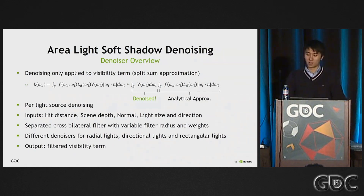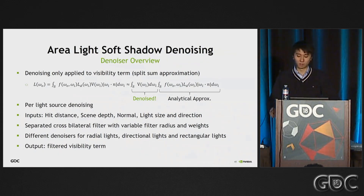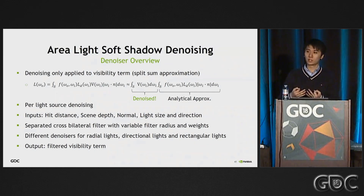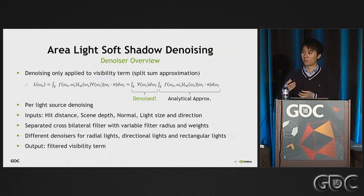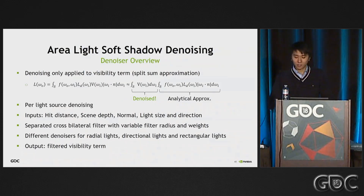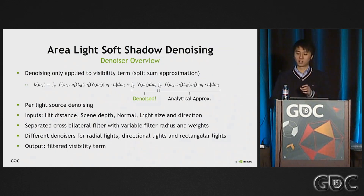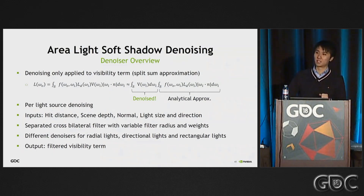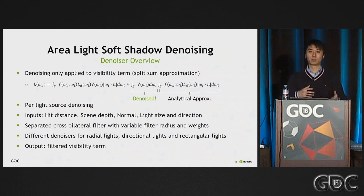For the actual denoising, we use a lot of auxiliary information from the GBuffer as well as from the scene context to derive an optimal filter footprint for each pixel. The needed information includes the ray hit distance, the scene depth, the world normal, and the light source sizes and directions. We actually have three different denoisers for the three types of light sources: directional lights, spherical lights, and rectangular light sources — each with different ways to estimate the filter footprint so that we can get optimal filter results very close to ground truth. Because the denoisers need input from the light source, we apply denoising for each light source separately, which is suboptimal for performance since performance scales linearly with the number of light sources. But we achieve much better results by denoising this way compared with denoising all light sources together.